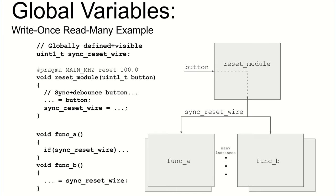Moving on to another big feature — global variables. There is a global namespace and global variables. For example, a global variable called sync_reset_wire — a single bit — where a top-level function has an input port that's a button, doing synchronization and debouncing, and critically driving the sync_reset_wire variable from within that function. Then from any other function, in any other place in the hierarchy, you can read that wire and use it like a reset. This saves you the hassle of hierarchically routing the wire into every single module instance where it's used, and offers interesting composability options.